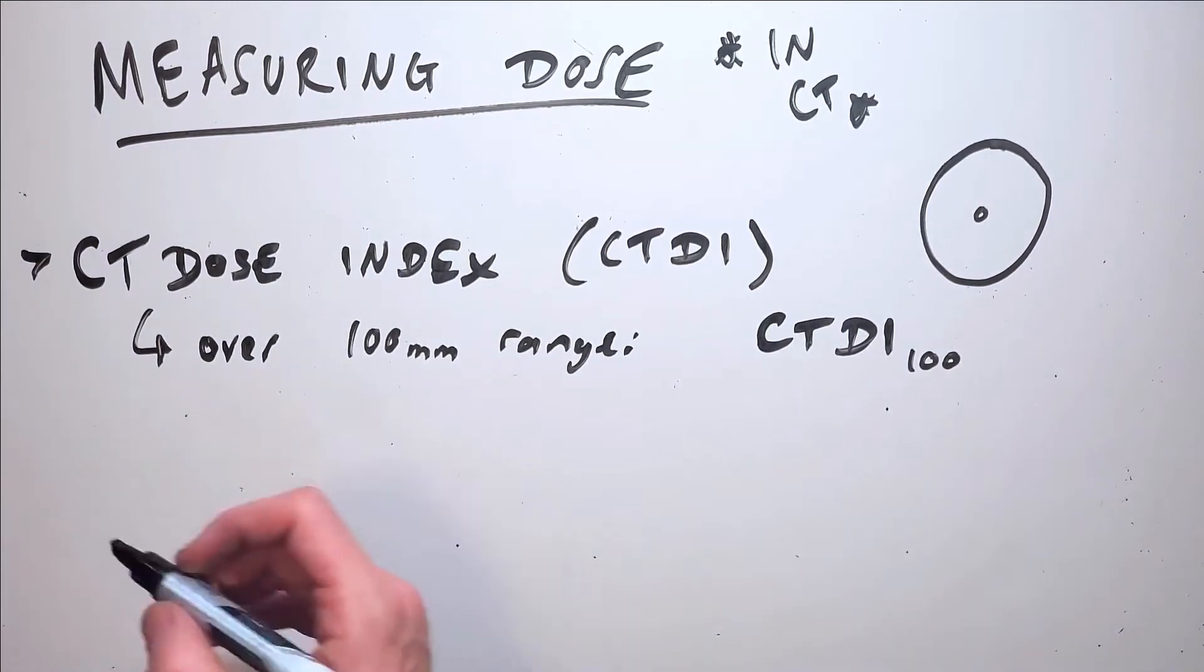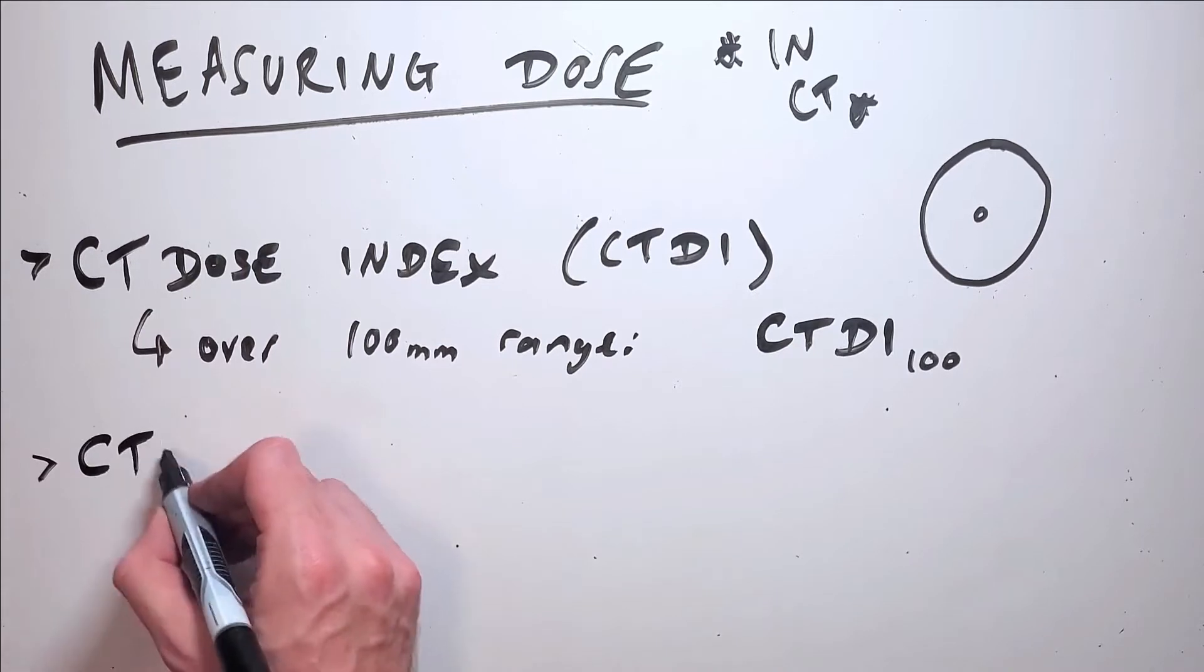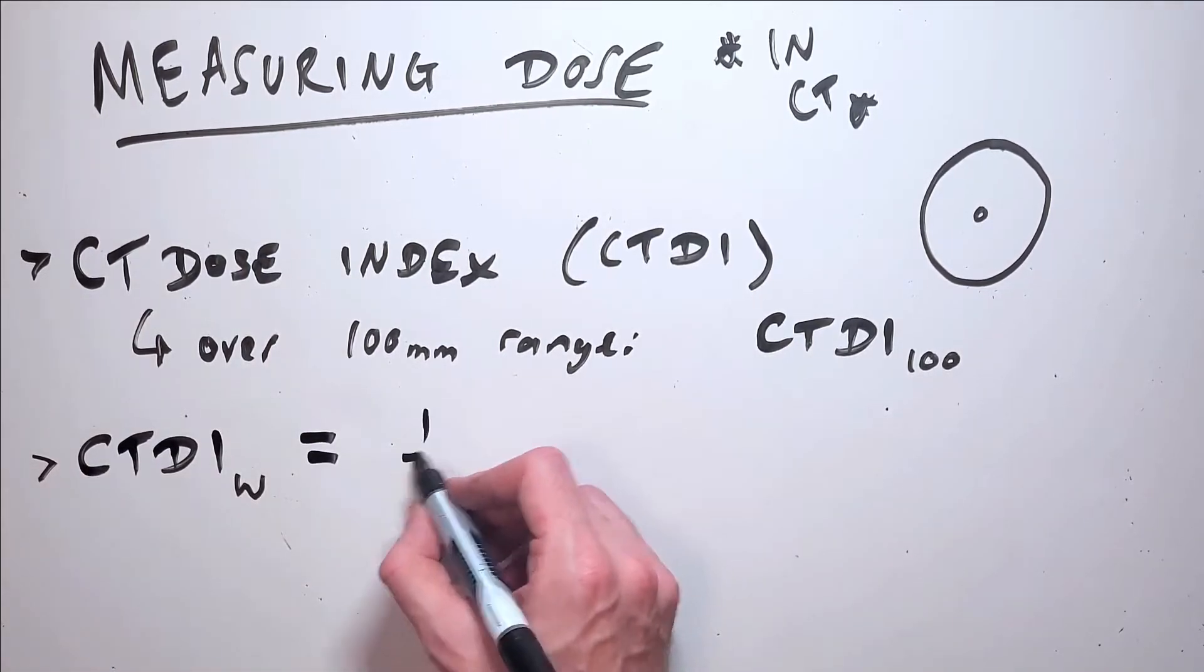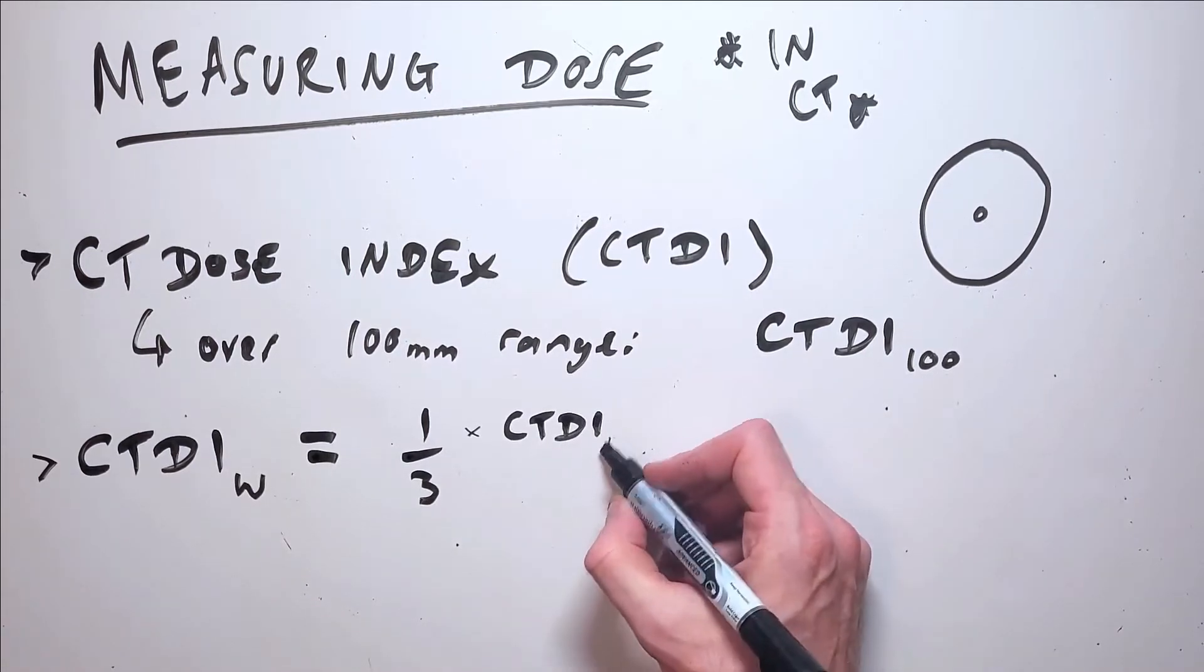However, the dose in the center doesn't tell the full story in CT because we're irradiating the patient from a 360 degree arc, meaning the periphery of the patient receives more dose than the center of the patient.